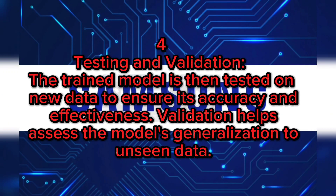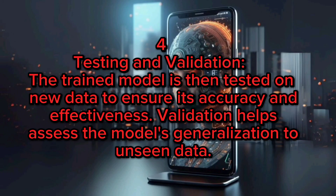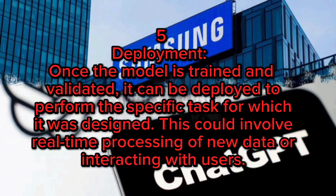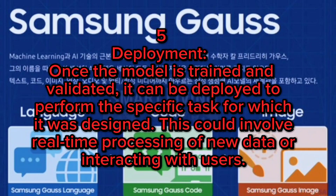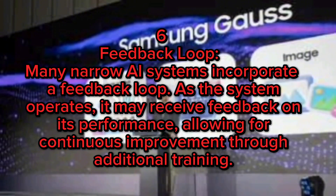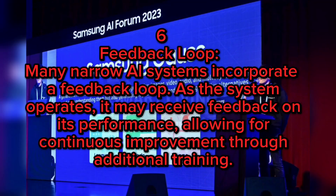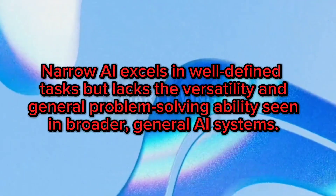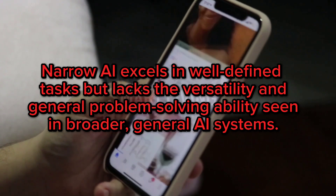Four: testing and validation — the trained model is then tested on new data to ensure its accuracy and effectiveness. Validation helps assess the model's generalization to unseen data. Five: deployment — once the model is trained and validated, it can be deployed to perform the specific task for which it was designed. This could involve real-time processing of new data or interacting with users. Six: feedback loop — many narrow AI systems incorporate a feedback loop; as the system operates, it may receive feedback on its performance, allowing for continuous improvement through additional training. Narrow AI excels in well-defined tasks but lacks the versatility and general problem-solving abilities seen in broader general AI systems.